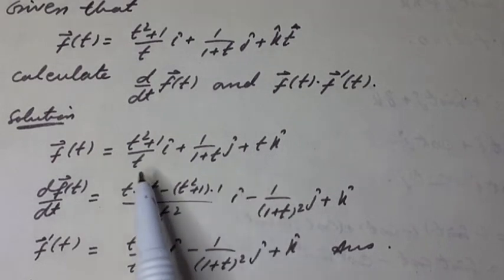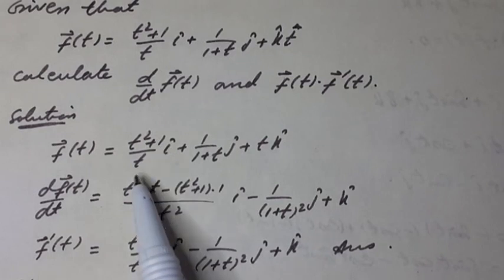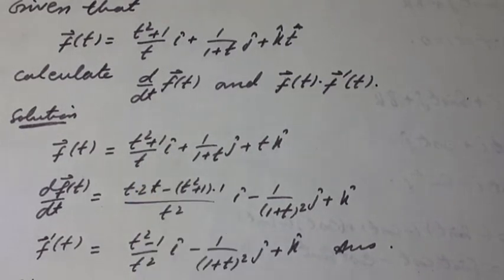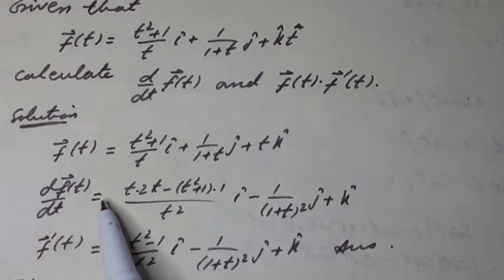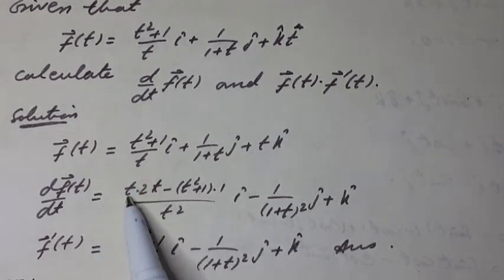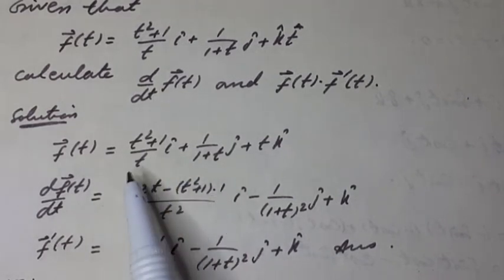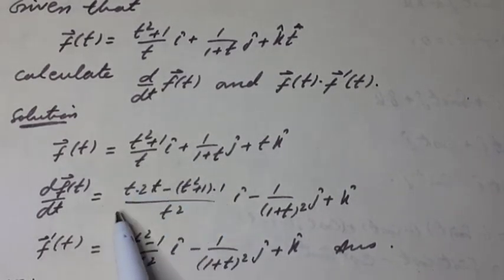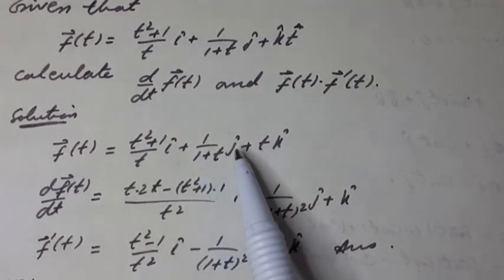Differentiating with respect to t, we have the derivative of the coefficient of i-hat. This is in u/v form, so applying the quotient rule: (v·du - u·dv) / v². The derivative of (t² + 1)/t equals (t·d(t² + 1) - (t² + 1)·dt) / t², which simplifies to (t² - 1)/t². For the j-hat coefficient, the derivative of 1/(1 + t) is −1/(1 + t)².